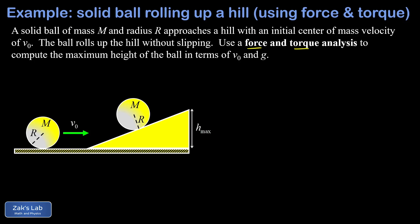In this problem we're analyzing the motion of a solid ball rolling up an incline without slipping. The main point of the problem is to find the maximum height of this ball.